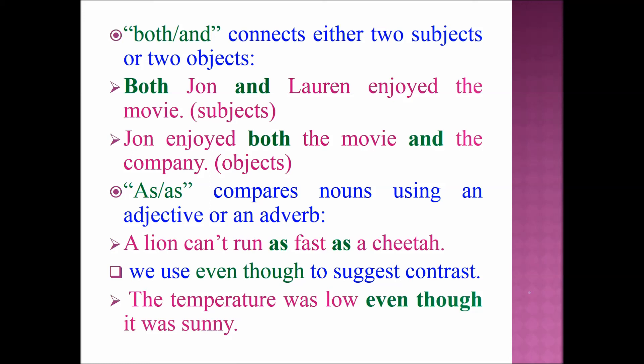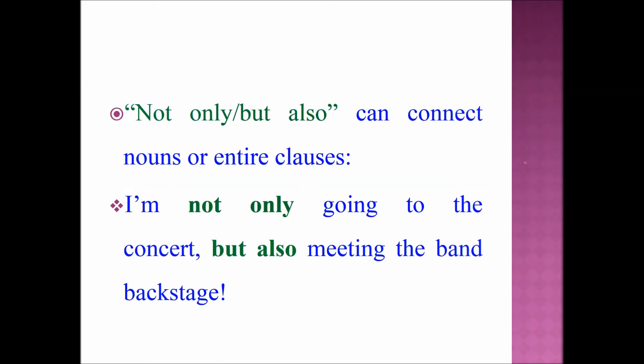AS/AS compares nouns using an adjective or an adverb. Example sentence: 'A lion can't run as fast as a cheetah.' We use EVEN THOUGH to suggest contrast. Example sentence: 'The temperature was low, even though it was sunny.' NOT ONLY/BUT ALSO can connect nouns or entire clauses. Example sentence: 'I am not only going to the concert but also meeting the band backstage.'